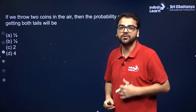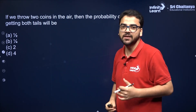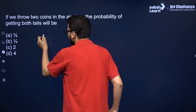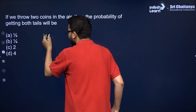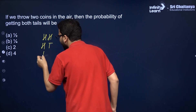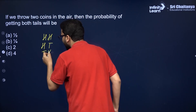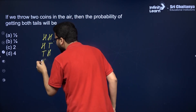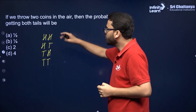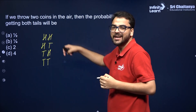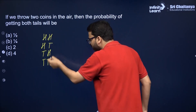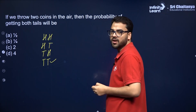If you throw two coins, what are the possible outcomes? The possible outcomes are: head-head, tail-tail, head-tail, and tail-head. So four possible outcomes are there, and you want both tails — basically one outcome out of four possible outcomes.